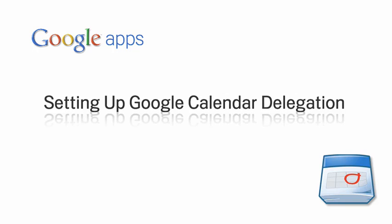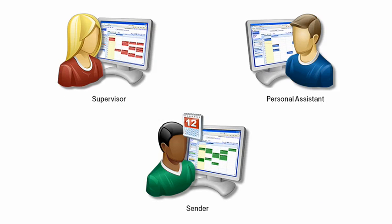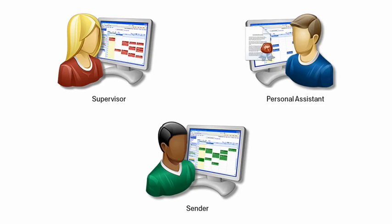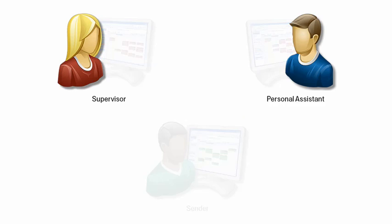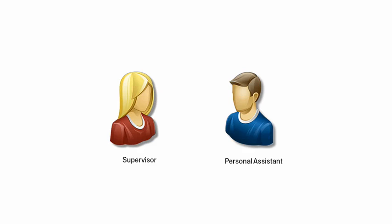Setting up Google Calendar Delegation. As a personal assistant, you've probably been tasked with scheduling and managing events for your supervisor. To accomplish this in Google Calendar, your manager must make you a delegate and grant you direct access to the calendars they want you to manage. After being granted access, you can schedule new events for them and accept or reject invites on their behalf. In this short video, we'll use Mary and Paul to help demonstrate the steps needed to become a delegate of your supervisor's Google Calendar.